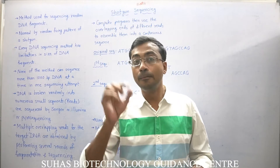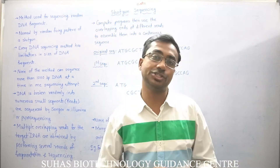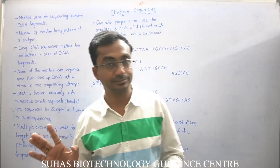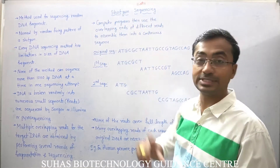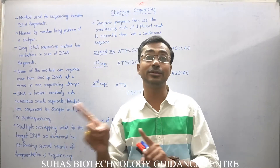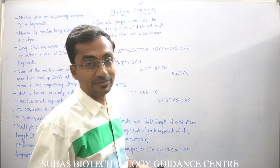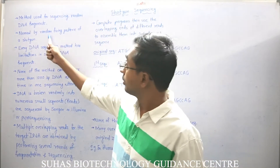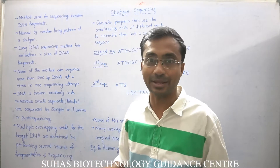All these are specific DNA sequencing methods using various principles, but every method we have seen has certain limitations — you cannot sequence the whole genome by any of these methods. That is the major problem, and that's why shotgun sequencing came into existence. Keep in mind it is not a specific DNA sequencing method like Sanger's Dideoxy. It is named from the shotgun's random firing pattern.